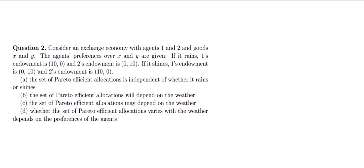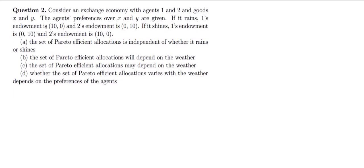Question 2: Consider an exchange economy with agents 1 and 2, and goods X and Y. The agents' preferences over X and Y are given. If it rains, Agent 1's endowment is (10, 0) and Agent 2's endowment is (0, 10). If it shines, Agent 1's endowment is (0, 10) and Agent 2's endowment is (10, 0).